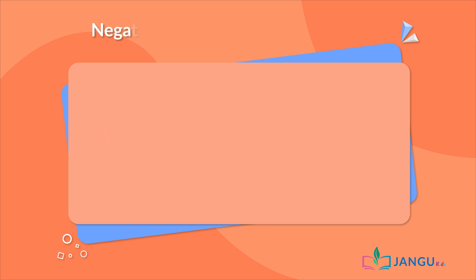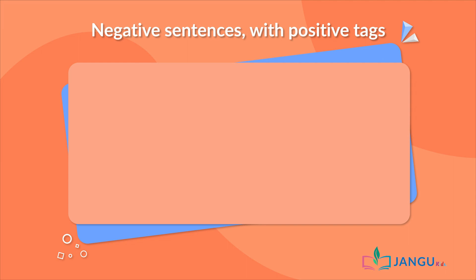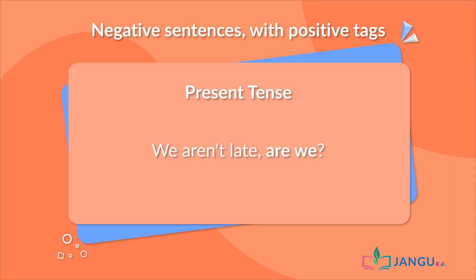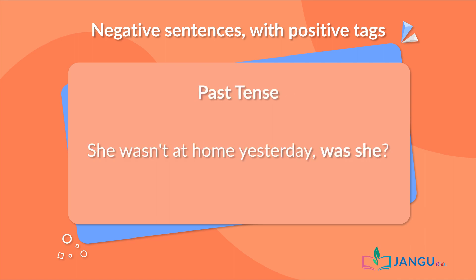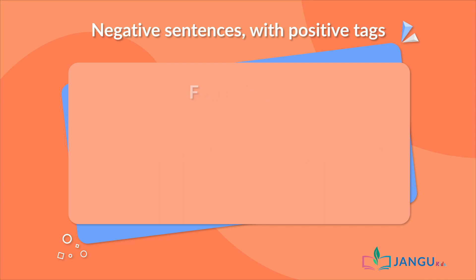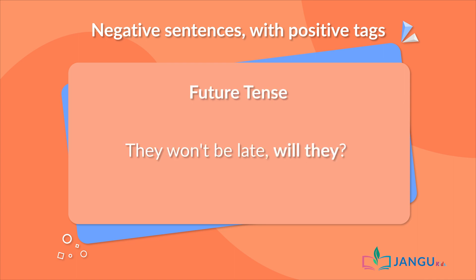Now let's look at negative sentences with positive tags. Present tense: "We aren't late, are we?" Past tense: "She wasn't at home yesterday, was she?" Future tense: "They won't be late, will they?"